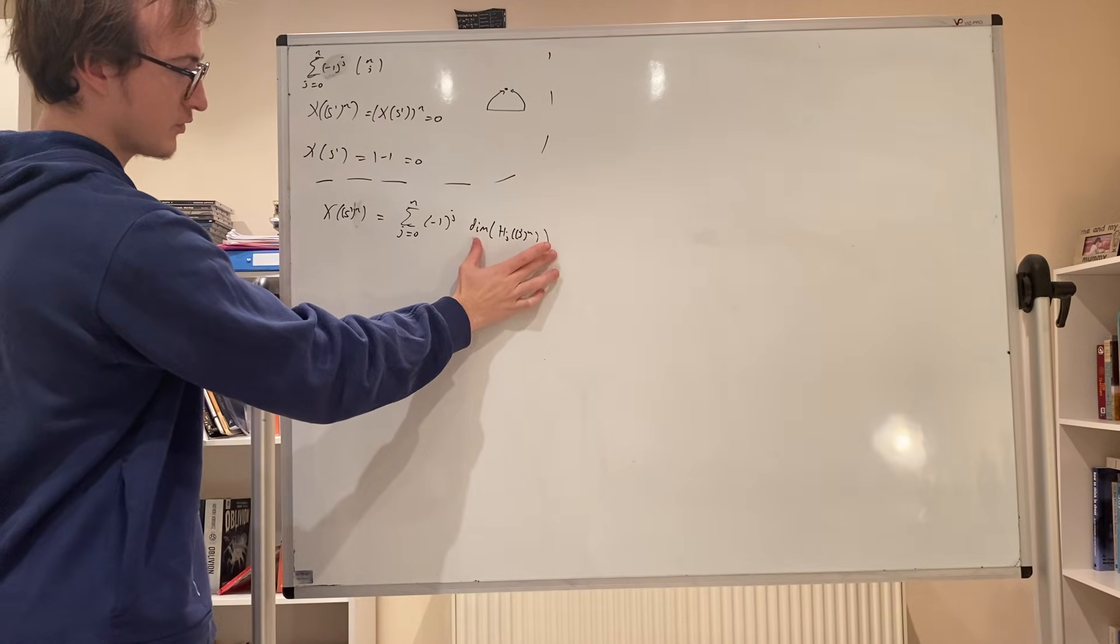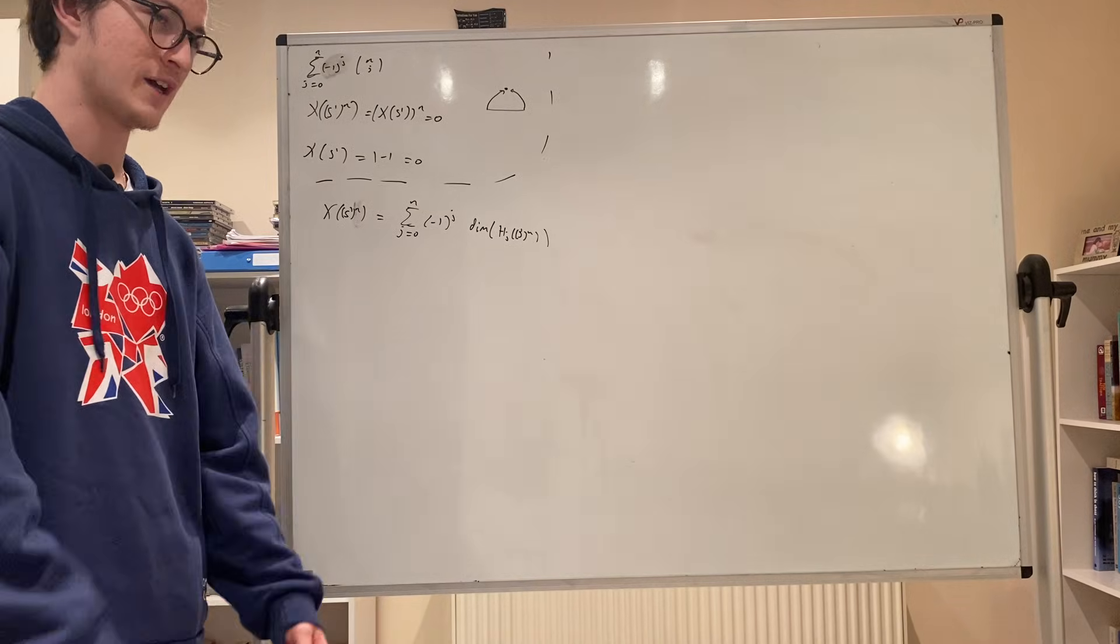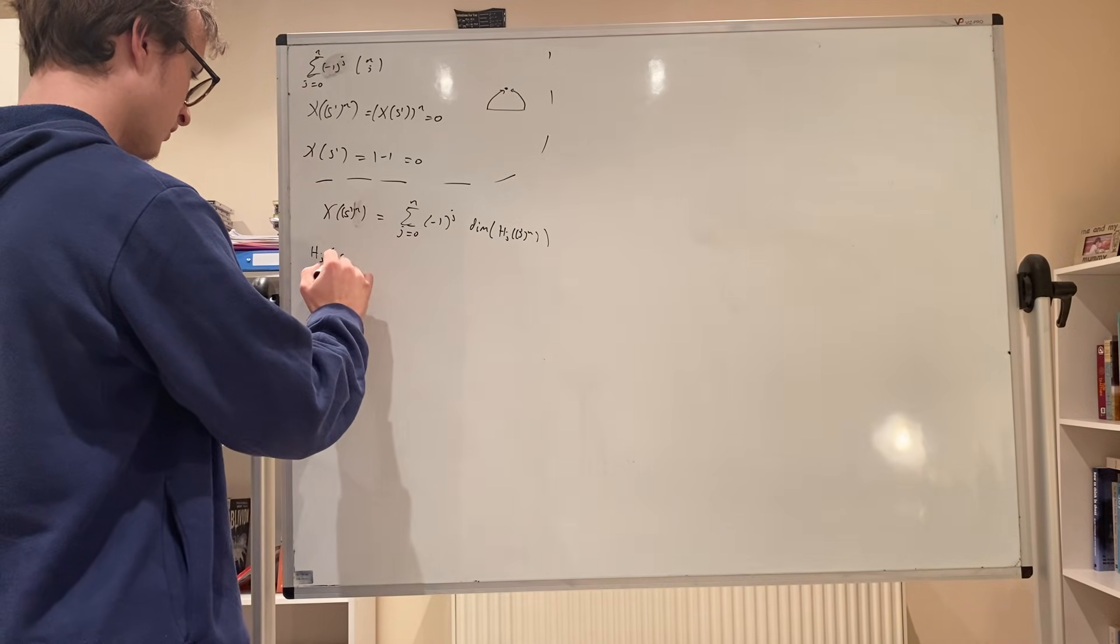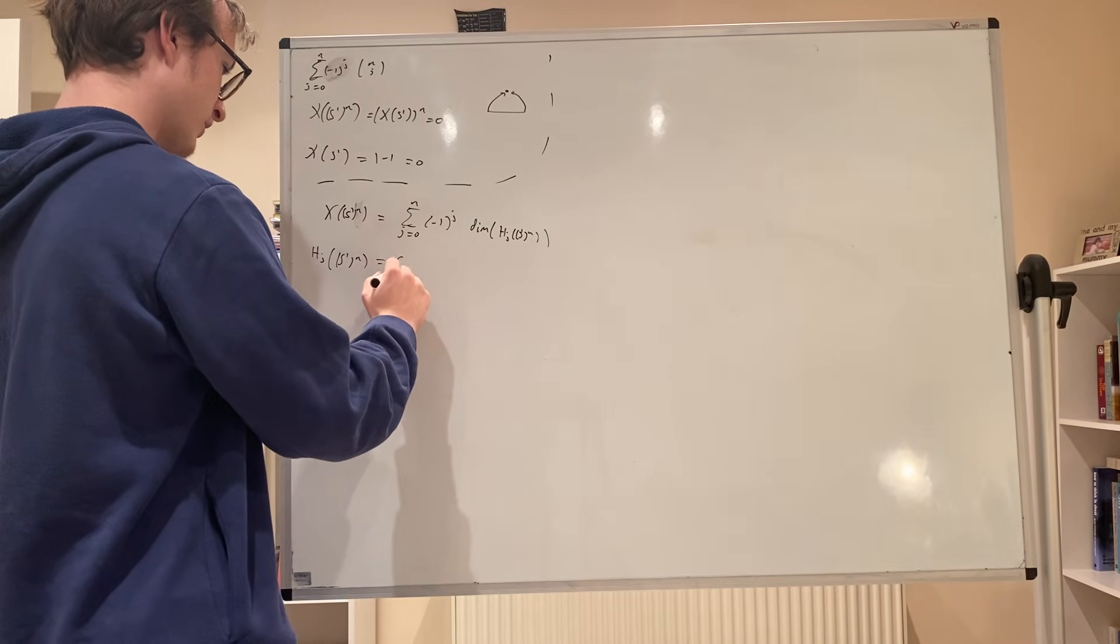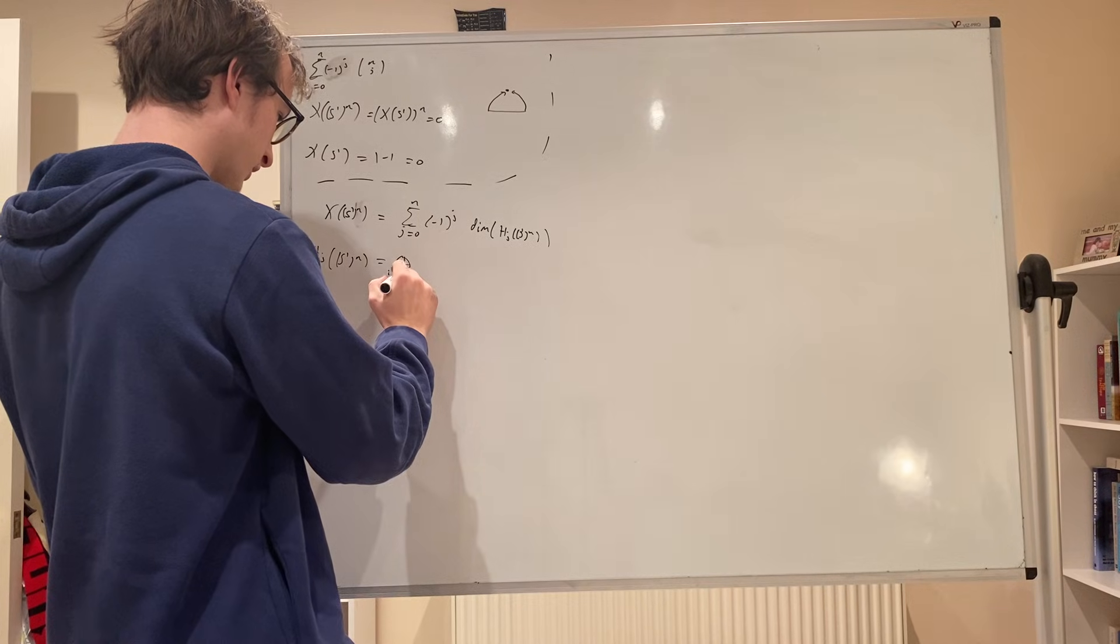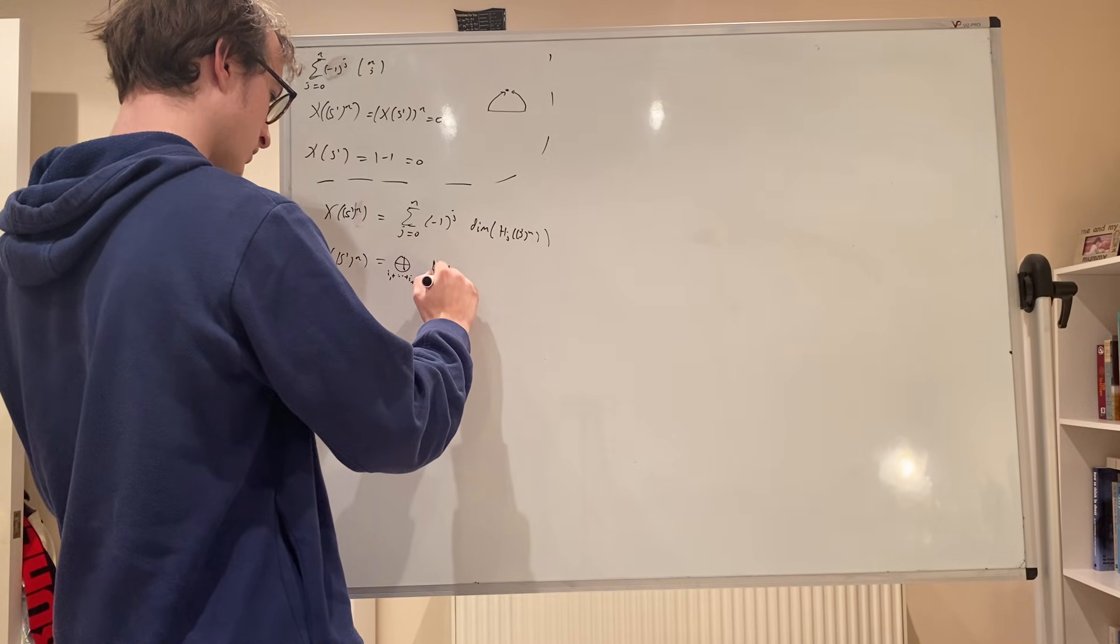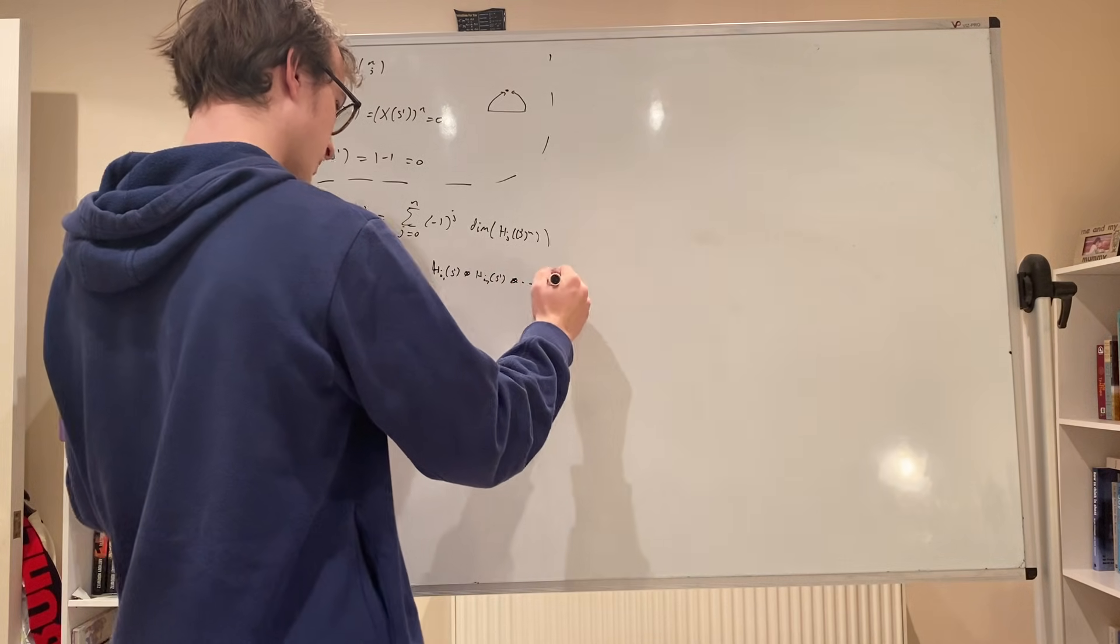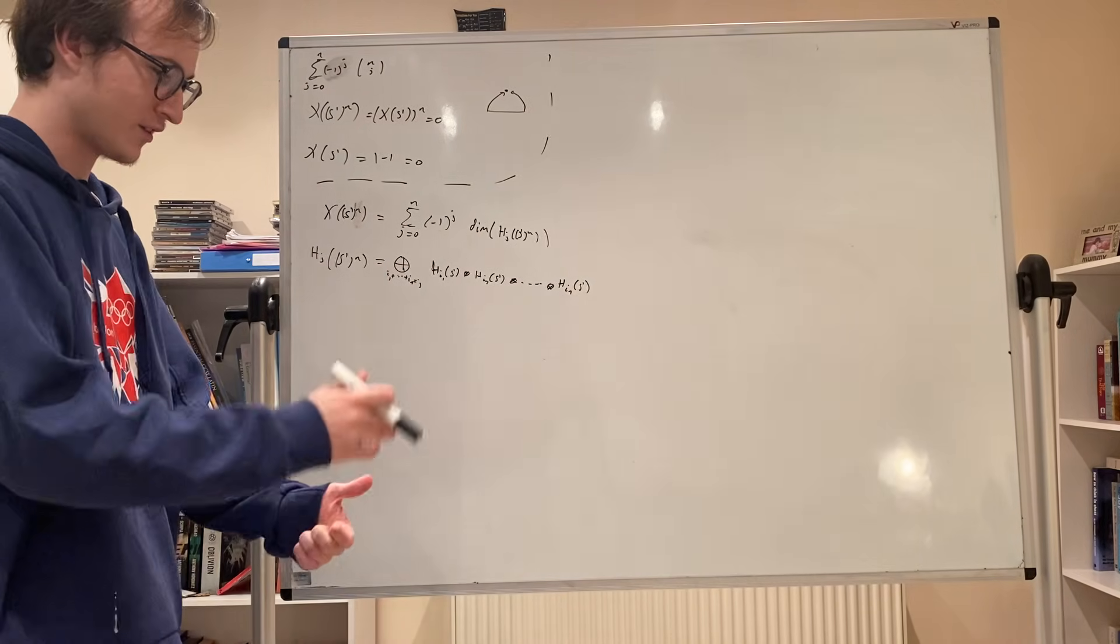Right, so how are we going to compute this? Thankfully we can use the Kunneth formula with no issue - there's no torsion issues or whatever because everything is free. So the jth cohomology of the n-torus is the direct sum over all i_1 plus up until i_n equals j of H^{i_1}(S^1) tensor H^{i_2}(S^1) tensor and so on up until H^{i_n}(S^1). Now the cohomology of the circle is really simple: it's the integers when n is 0, the integers when n is 1, and zero otherwise.